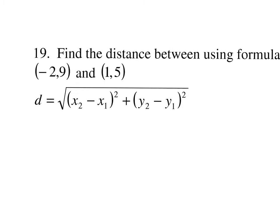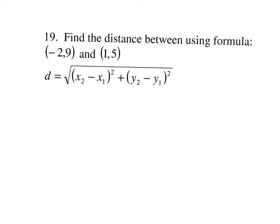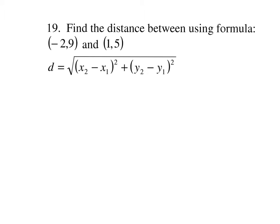At number 19, we're going to find the distance using the distance formula. Here's the distance formula written out. We need to label these points: x1, y1, x2, y2. Then we use those labels to fit them into the formula. So x2 will be 1, x1 will be negative 2, y2 will be 5, y1 will be 9.